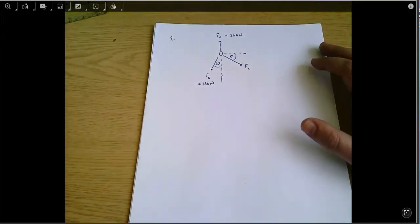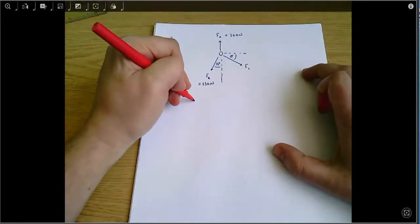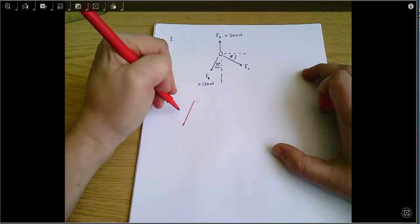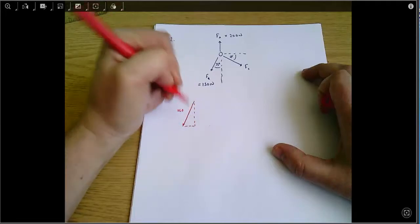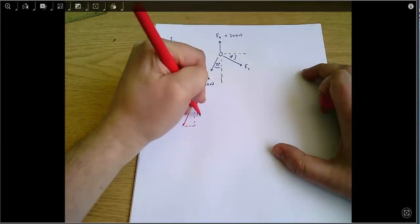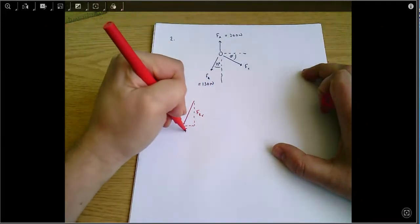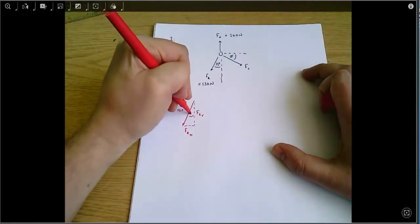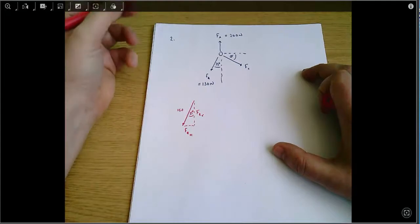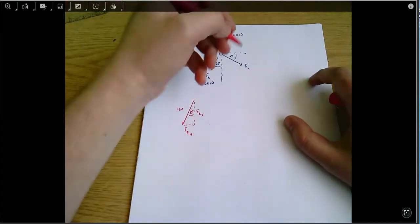So I'm going to start just by looking at FB on its own. And if I look at FB I've got a triangle that looks like this. This is the vertical component of FB and this is the horizontal component. And this angle here I know is 35 degrees. Not sure I've drawn my 35 degrees quite right there, but that doesn't really matter.